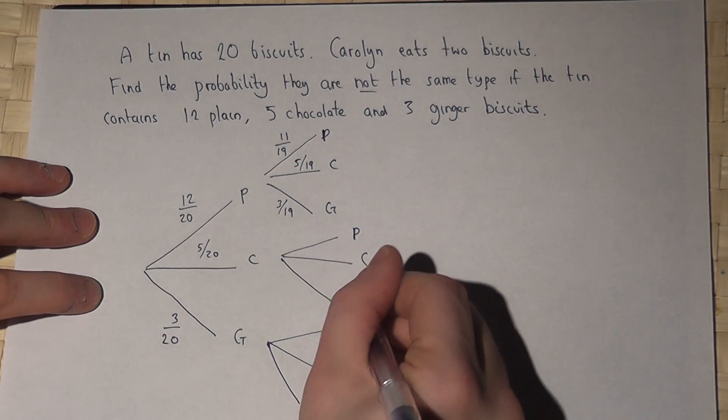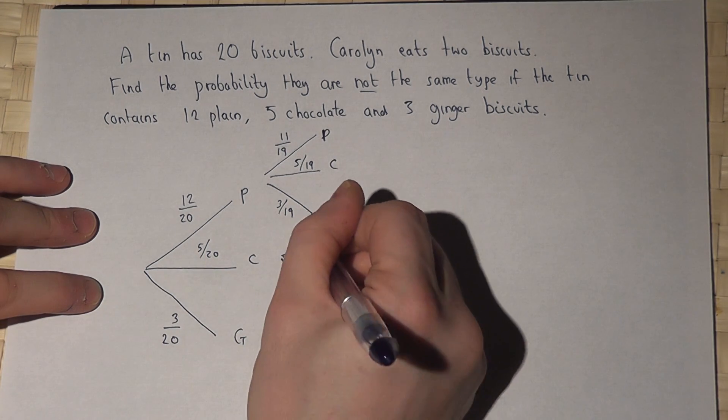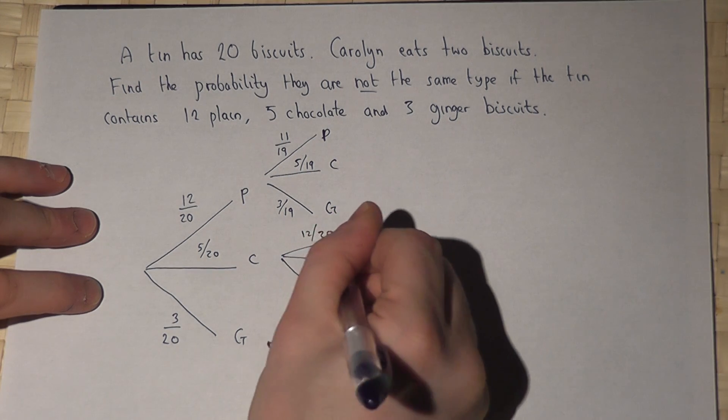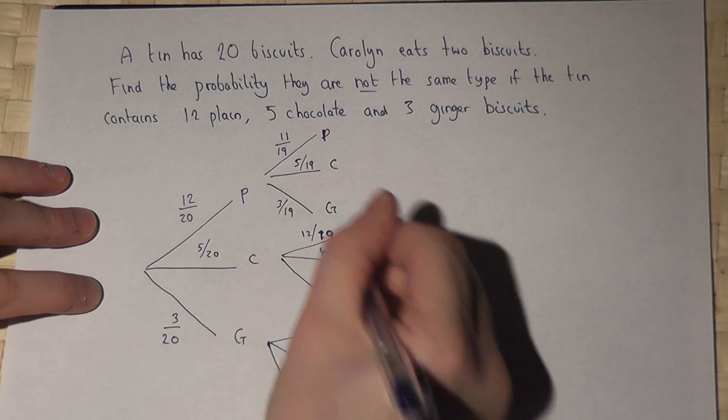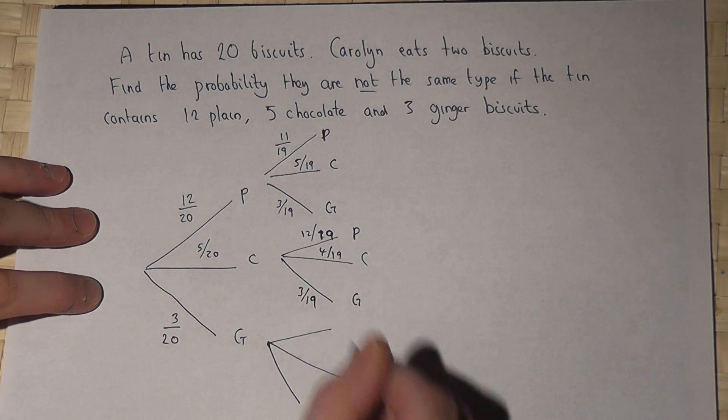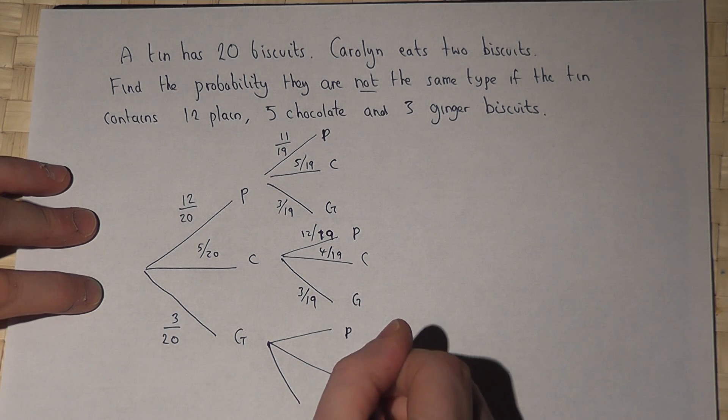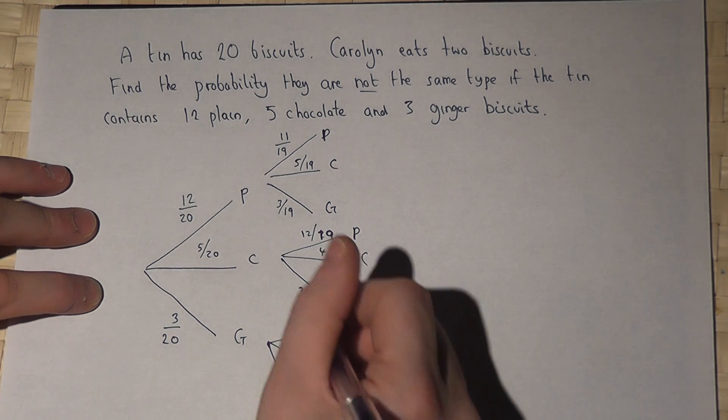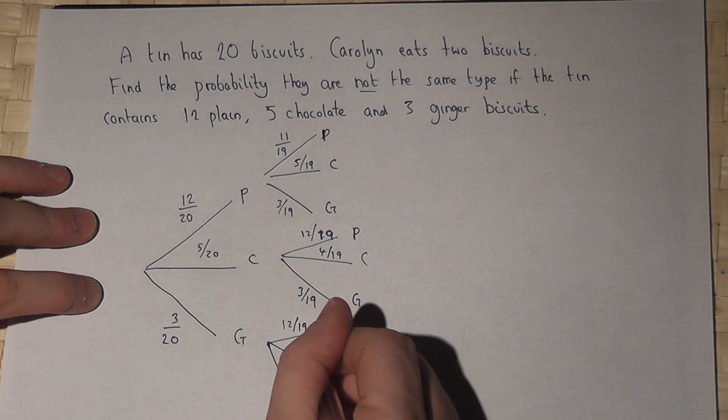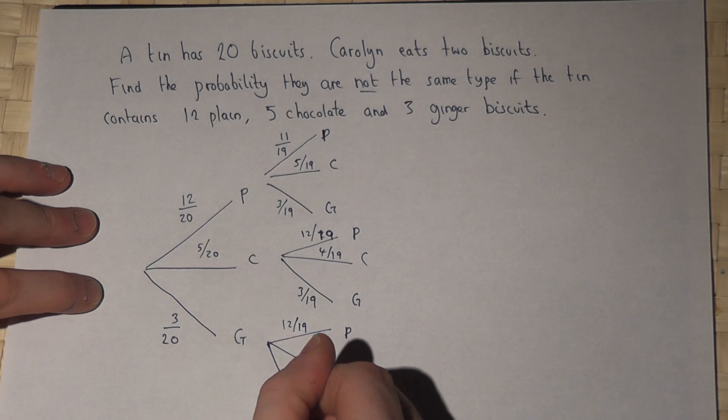However, if she got a chocolate first, there are still twelve plain, but now there are four chocolate, and now there are still three ginger. But if she got a ginger first, there are still 12 plain, there are still five chocolate, but now there are two ginger.